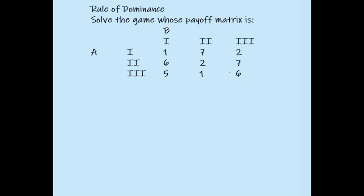For player A, the gains given in the payoff matrix are: 1, 7, 2 for the first strategy; 6, 2, and 7 for the second strategy; and 5, 1, and 6 for the third strategy.